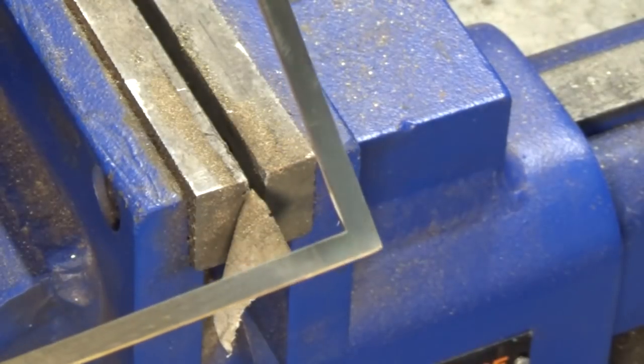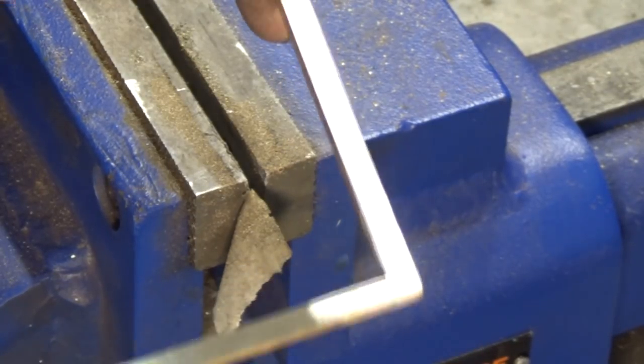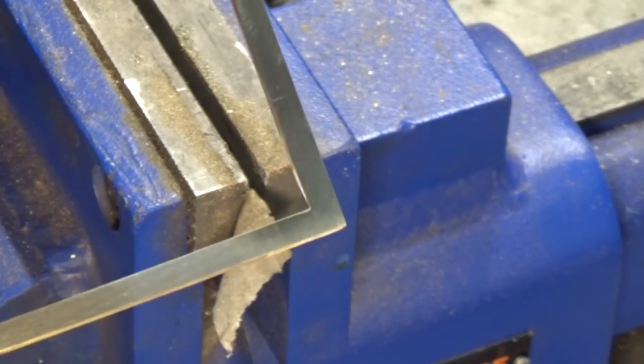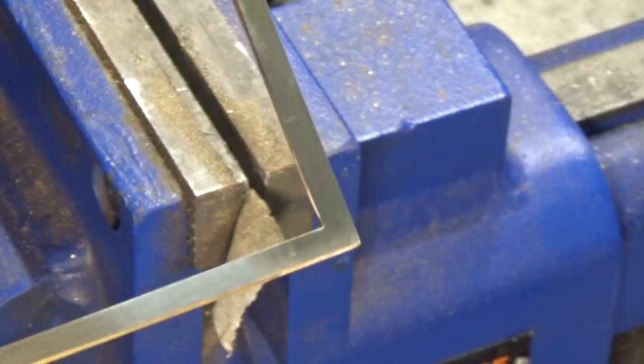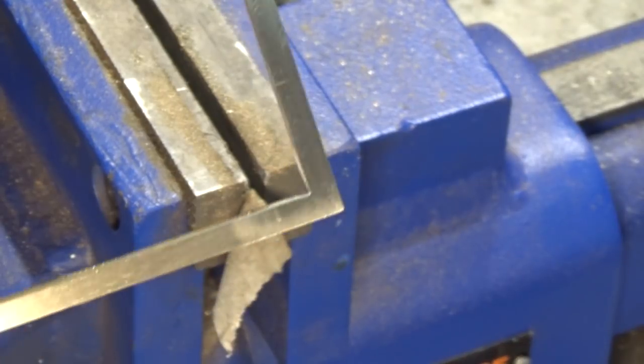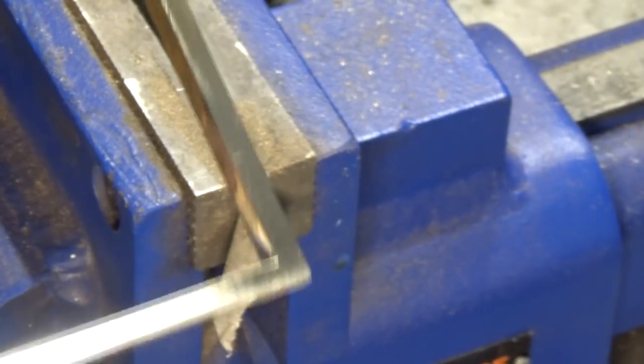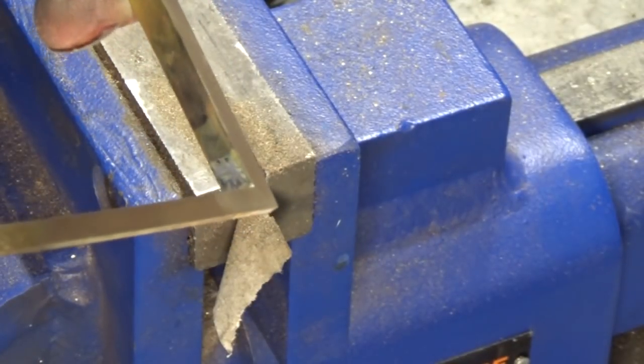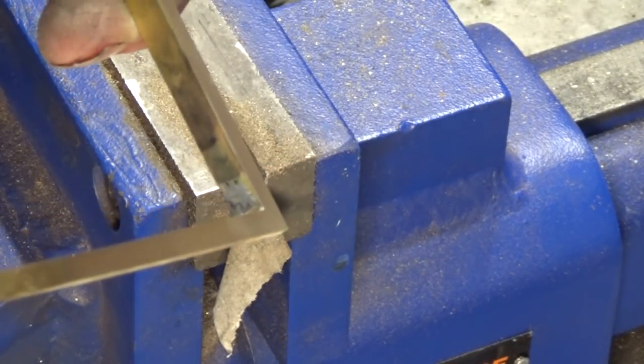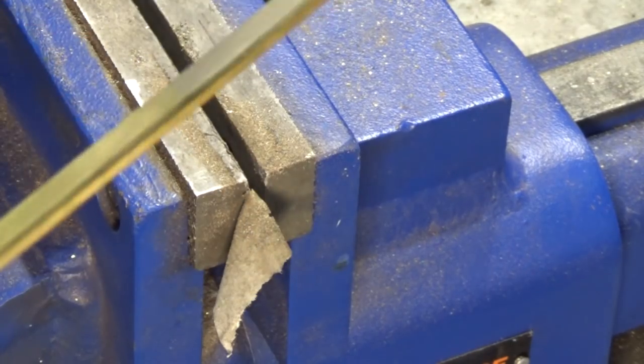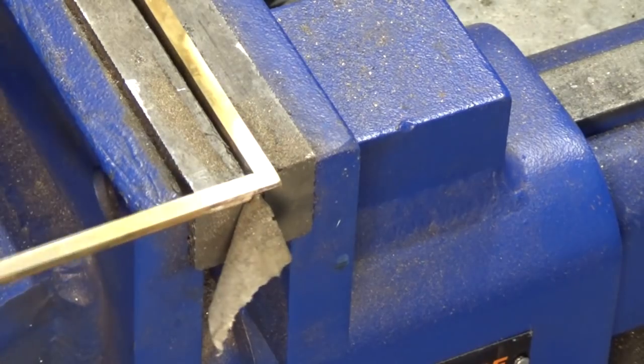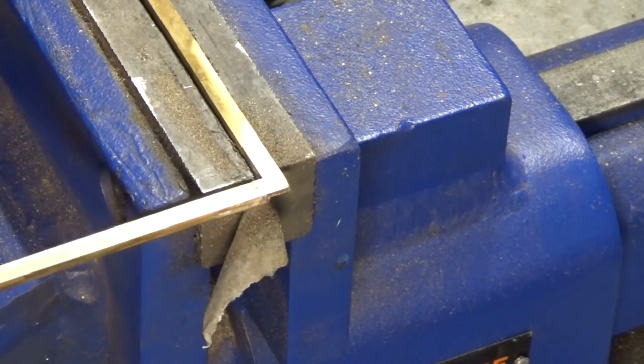Now there's that same corner done now. I've just done that on the Scotch-Brite wheel. But it's not polished. All we've done is basically made it flat and removed the silver solder. The polishing process comes next. And of course I still need to do the inside corner. Get rid of all that silver solder and flux in there as well. So yes, it's tedious. It's boring. It's no fun whatsoever. But it's got to be done.